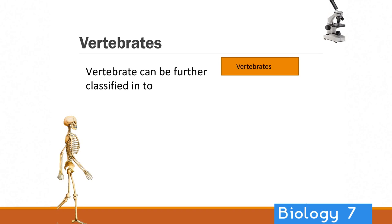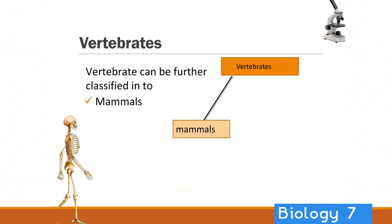Vertebrates can be further classified. We've got mammals — when I was talking about the chimpanzee before, that was another example of a mammal. Humans are a mammal. The whale is a mammal. So they've got blood, they're breathing air, and they reproduce live young.